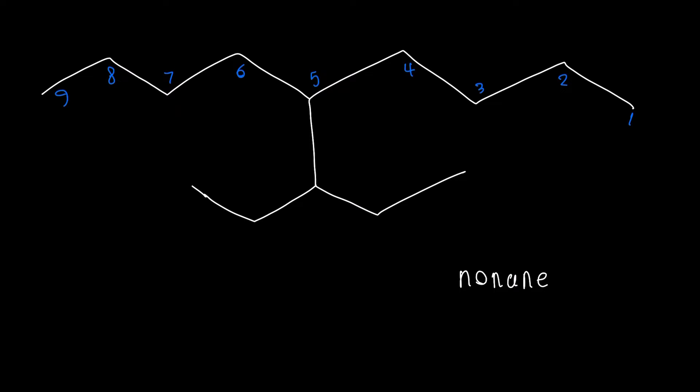On position 5, we have this whole branch. So we know that our substituent is going to be on carbon 5.